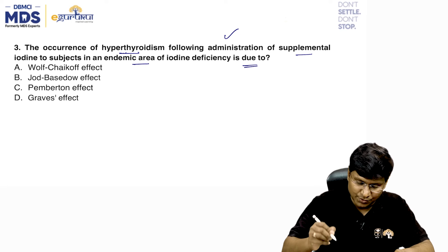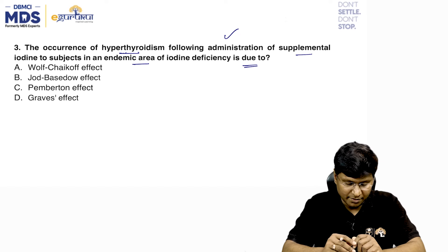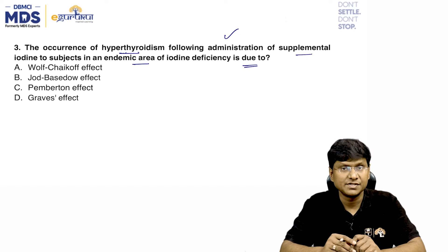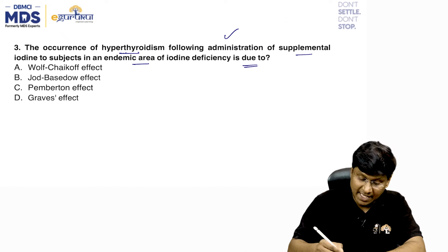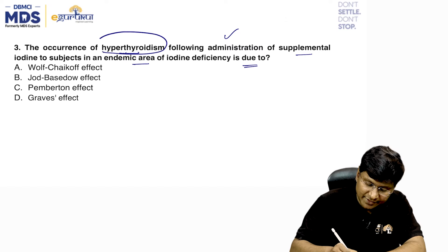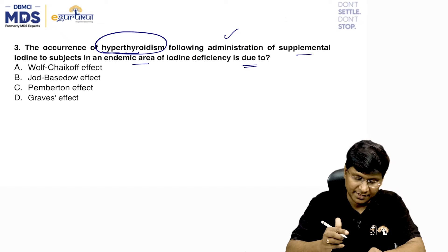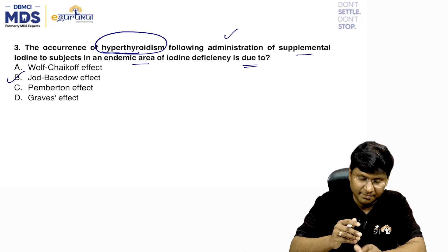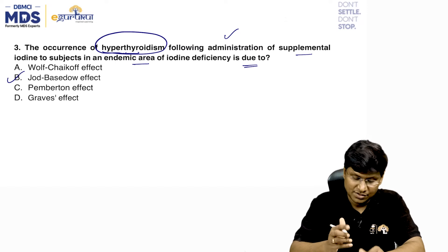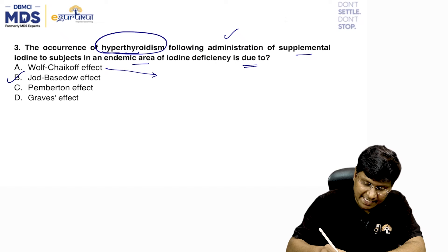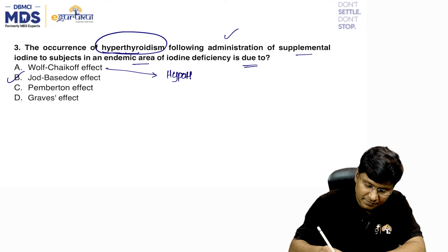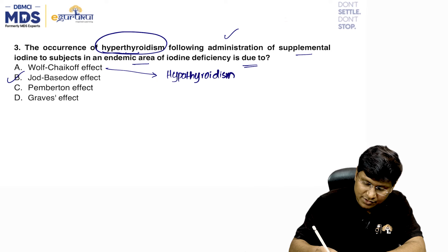Next question: the occurrence of hyperthyroidism following administration of supplemental iodine to subjects in an endemic area of iodine deficiency is due to which effect? Options: Wolff-Chaikoff effect, Jod-Basedow effect, Pemberton effect, or Graves effect. Iodine-induced hyperthyroidism in an individual with endemic iodine deficiency goiter is known as the Jod-Basedow phenomenon.